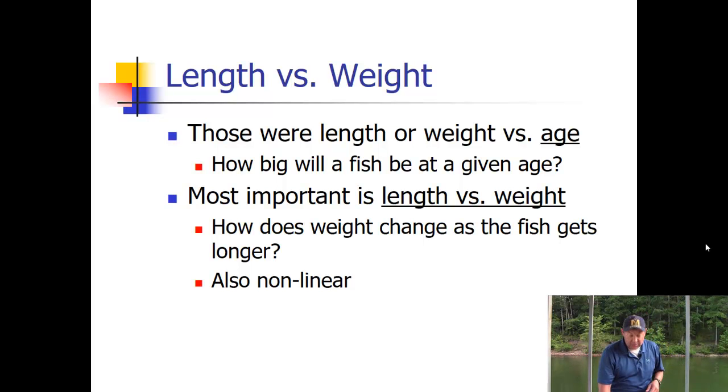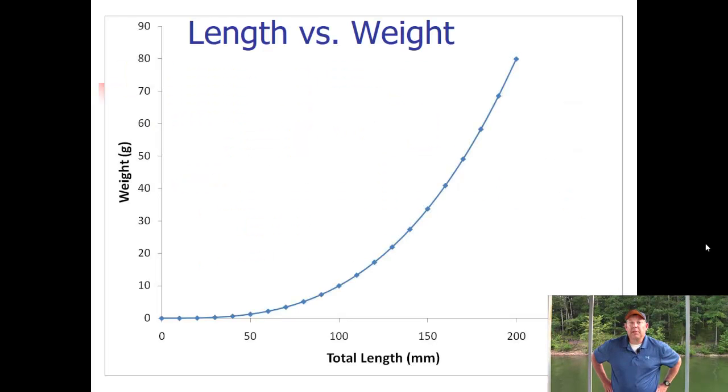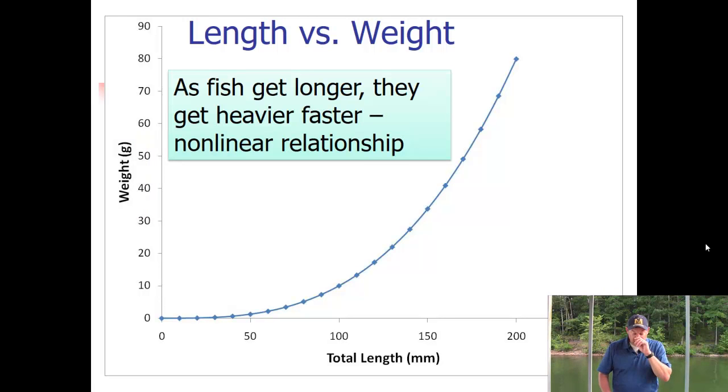This is also non-linear and typically looks like this. So between length at age, weight at age, and length versus weight, you have three differently shaped graphs, but they're all pretty typical across species and populations. Here on the x-axis I've got total length, and weight on the y-axis.